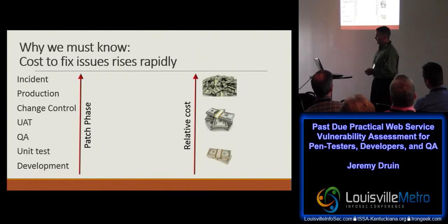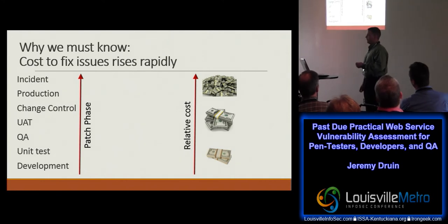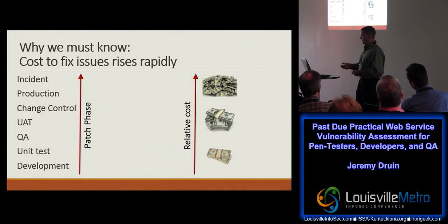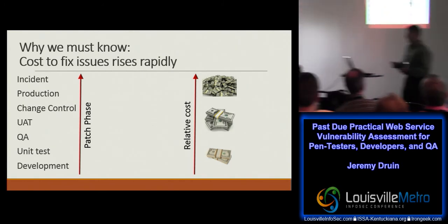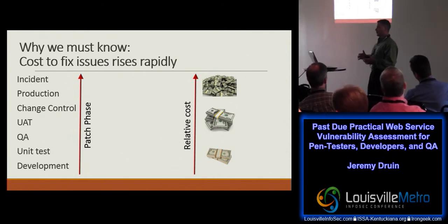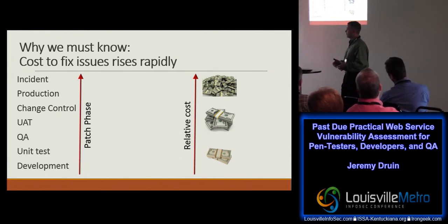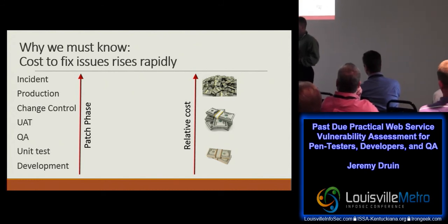So why do we care? Wherever you find that vulnerability, if it's sooner in the cycle, it's going to be a lot cheaper to fix. It gets very expensive to fix problems once they've already reached the production phase, and really expensive if they reach an incident phase. The relative cost is much lower by finding these problems in development — or QA if you have to, but even that's a little more expensive than catching it in development.